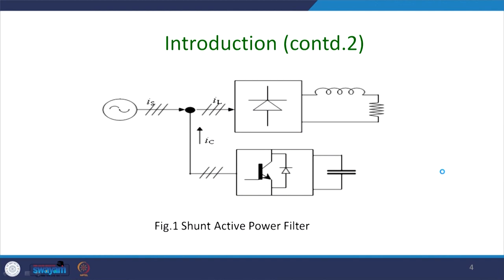This is the topology — the one-line diagram of the shunt active power filter. You have a source Vs, and thereafter mostly you have a small inductance, which is the source inductance and can be the leakage inductance of the transformer. Once you pass through a nonlinear load, the current profile will be distorted, and ultimately you have to inject the current in such a way that the load sees as if a resistive load is connected to it.